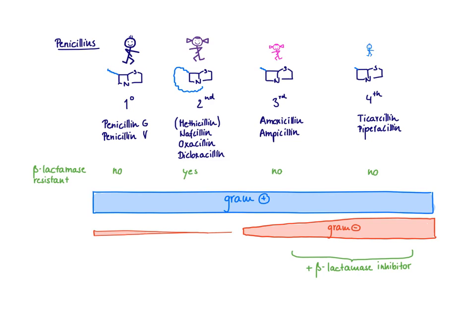You add the beta-lactamase inhibitor on top of the third generation, so you still have some gram negative coverage and the inhibitor deals with the beta-lactamases. For the fourth generation of penicillin, it's a very similar story — the molecule is even smaller, giving even more gram negative activity, but it's still very unprotected against beta-lactamases, so you need to give an extra molecule on top to deal with them. Remember: the kids need to go with the babysitter — the beta-lactamase inhibitor.